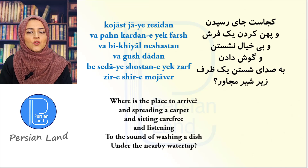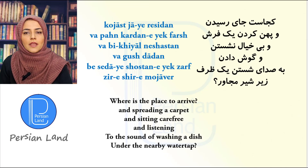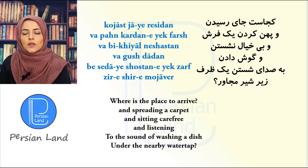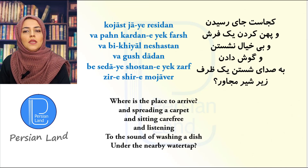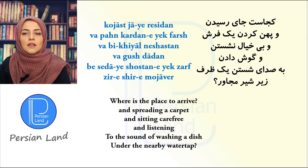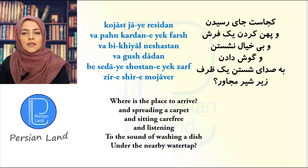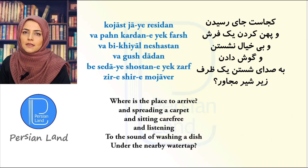به صدای شستن یک ظرف زیر شیر مجاور، کجاست جای رسیدن؟ پهن کردن فرش means 'to spread the carpet'. به خیال means 'carefree'. نشستن is the infinitive. گوش دادن — compound infinitive — means 'listening'. شستن means 'washing'; یک ظرف means 'a dish'; زیر شیر مجاور — شیر is 'the water tap' and مجاور means 'nearby'.